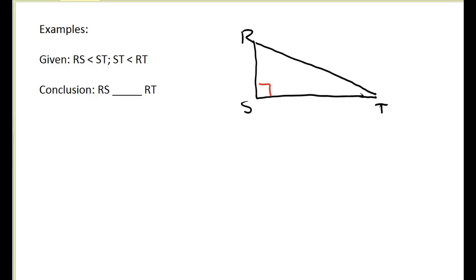So let's say we have this right triangle and we're given that side RS is less than side ST and side ST is less than side RT. So what can we conclude? Is RS greater than RT, equal to RT, or less than RT? Well, RS is less than ST, and ST is less than RT. So that means RS must be less than RT.